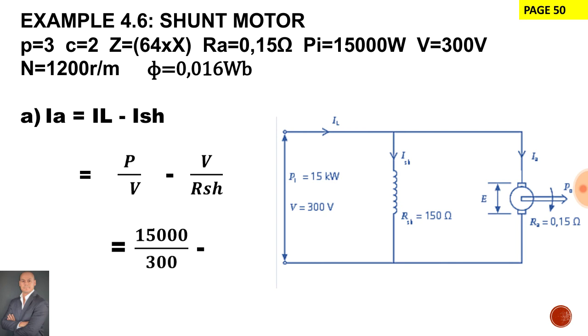Substitute all those values in. Our power is 15,000 watts and the terminal voltage 300. For the shunt current it is 300 volts over 150 ohms. Therefore the supply current is 50 amps and we have two amps flowing through the shunt winding. Therefore the armature current is drawing 48 amps.